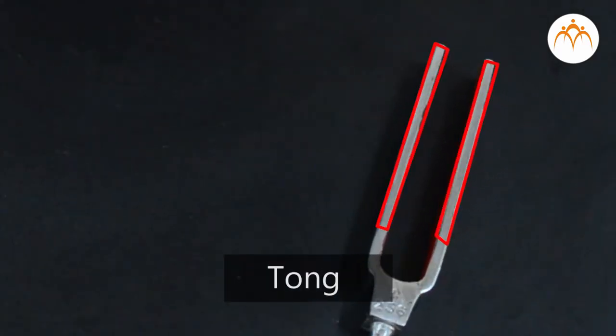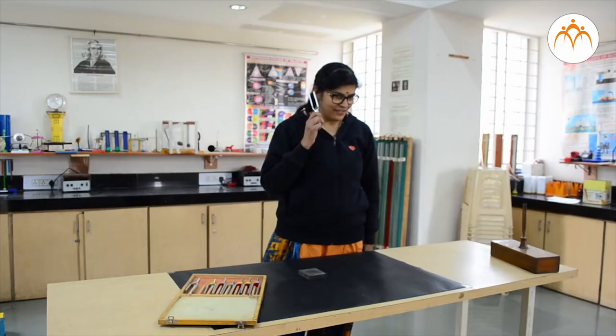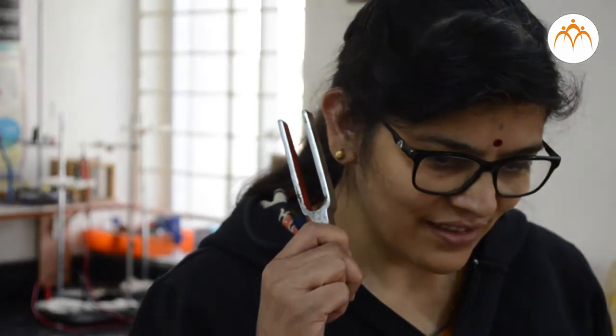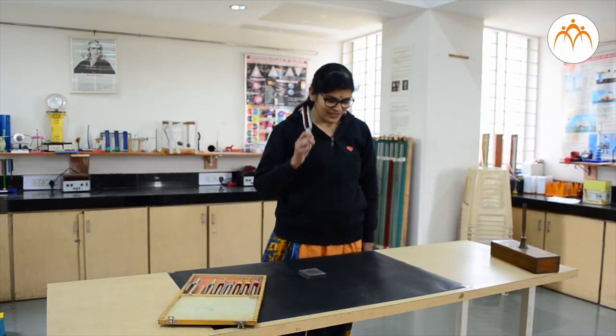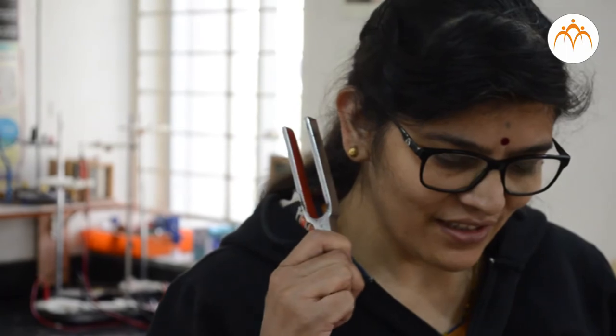These are called tongs of the fork. When we hit the tuning fork very hard, the tongs vibrate. As the tong vibrates, air surrounding it also vibrates. We can barely see the tongs vibrating.